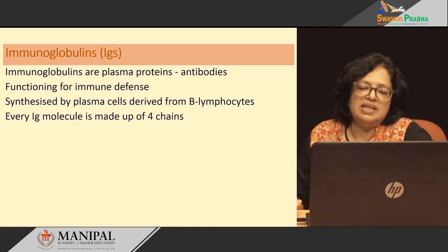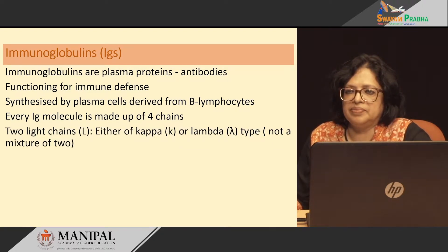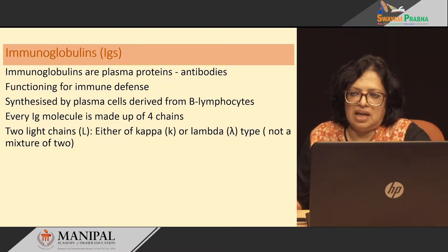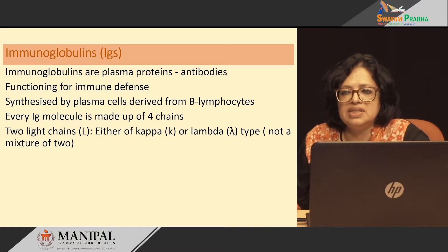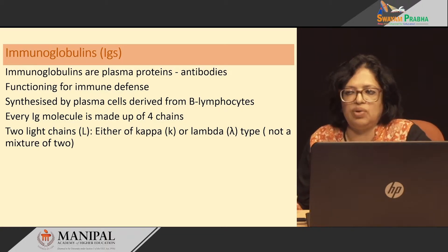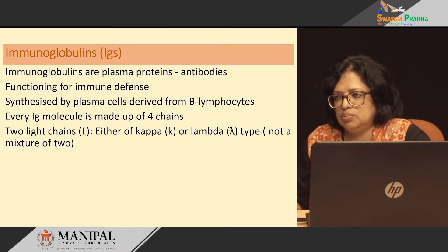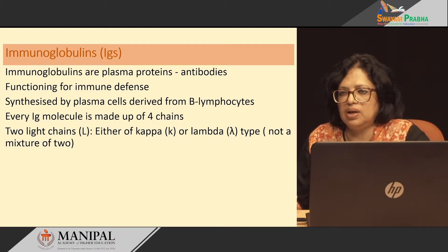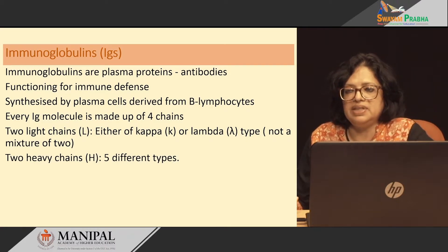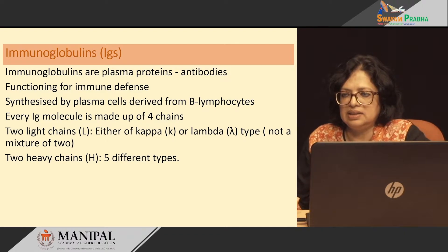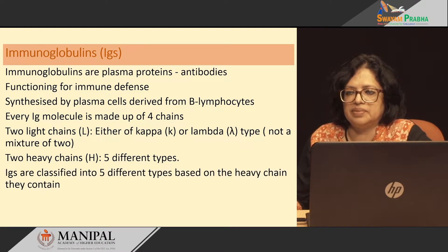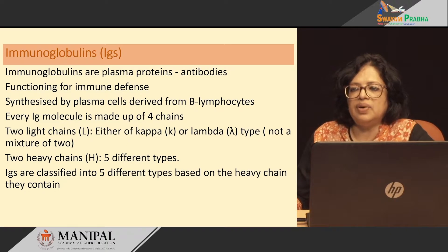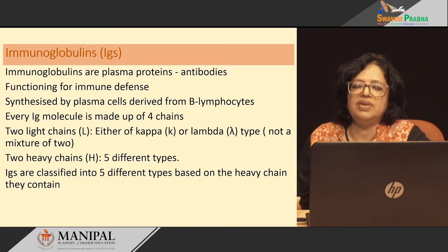Every immunoglobulin molecule is made up of four chains: two light chains either of kappa type or lambda type, but they are never a mixture of the two. In one immunoglobulin molecule, we cannot have one kappa type and one lambda type — both should be either kappa or lambda. Then there will be two heavy chains, denoted by a capital H, and these heavy chains are of five different types. Immunoglobulins are classified into five different types based on the heavy chain they contain.